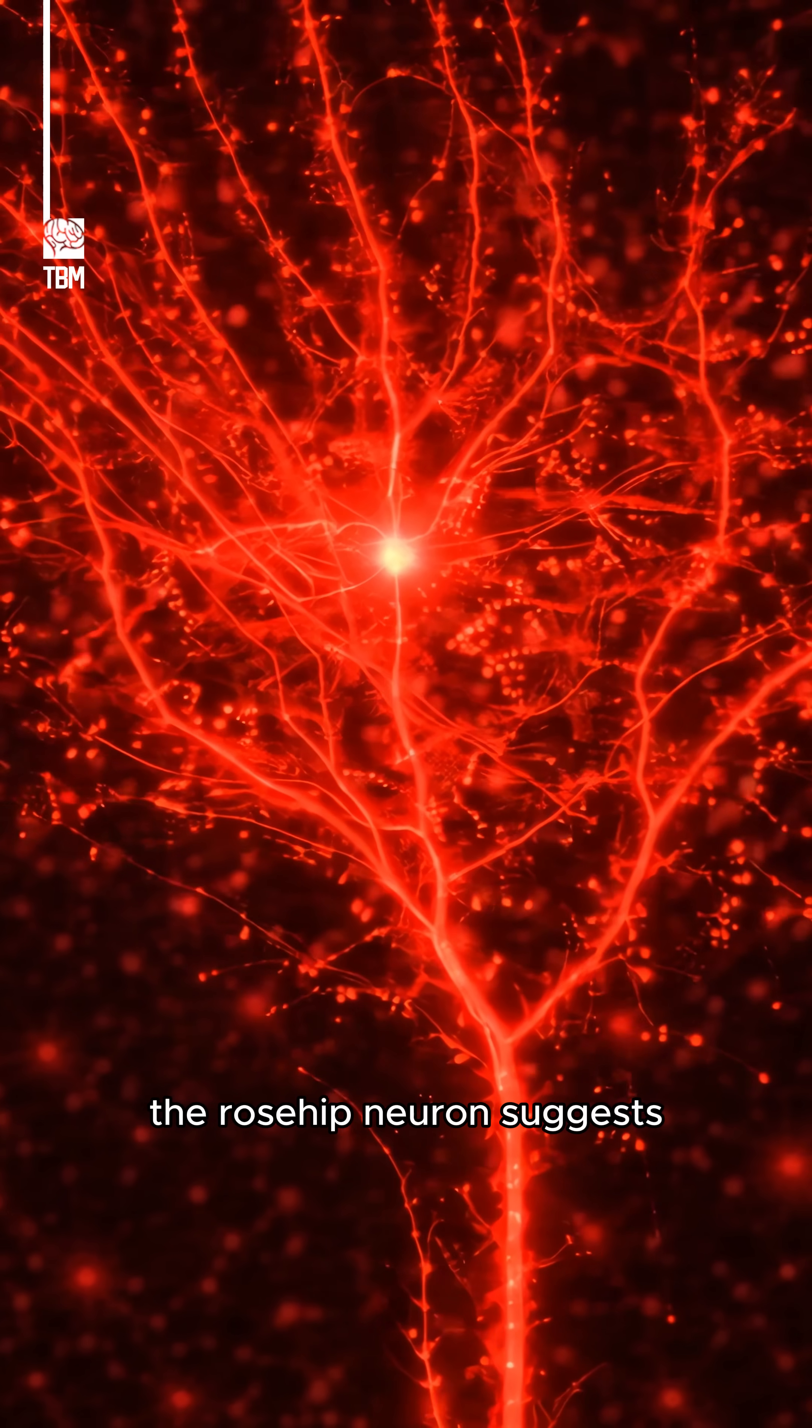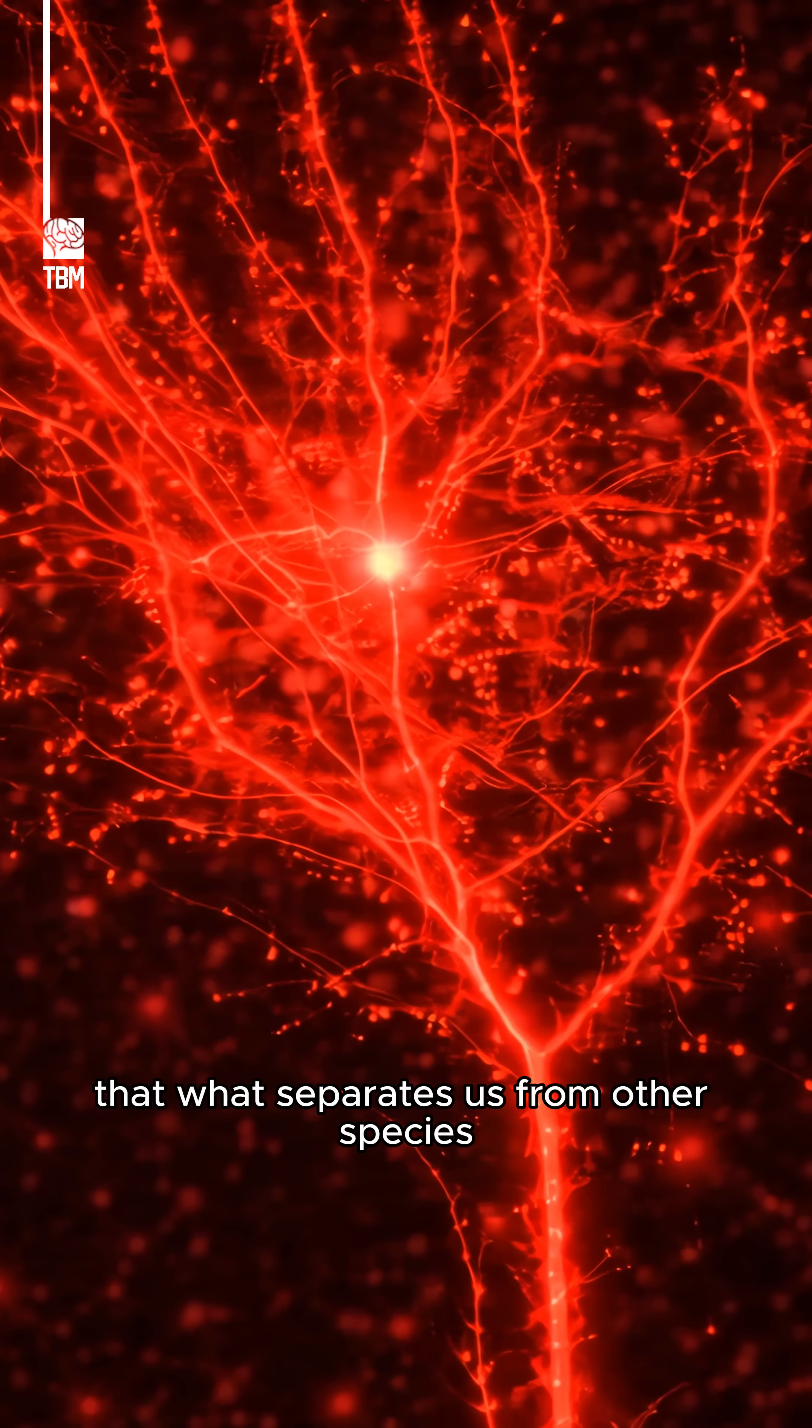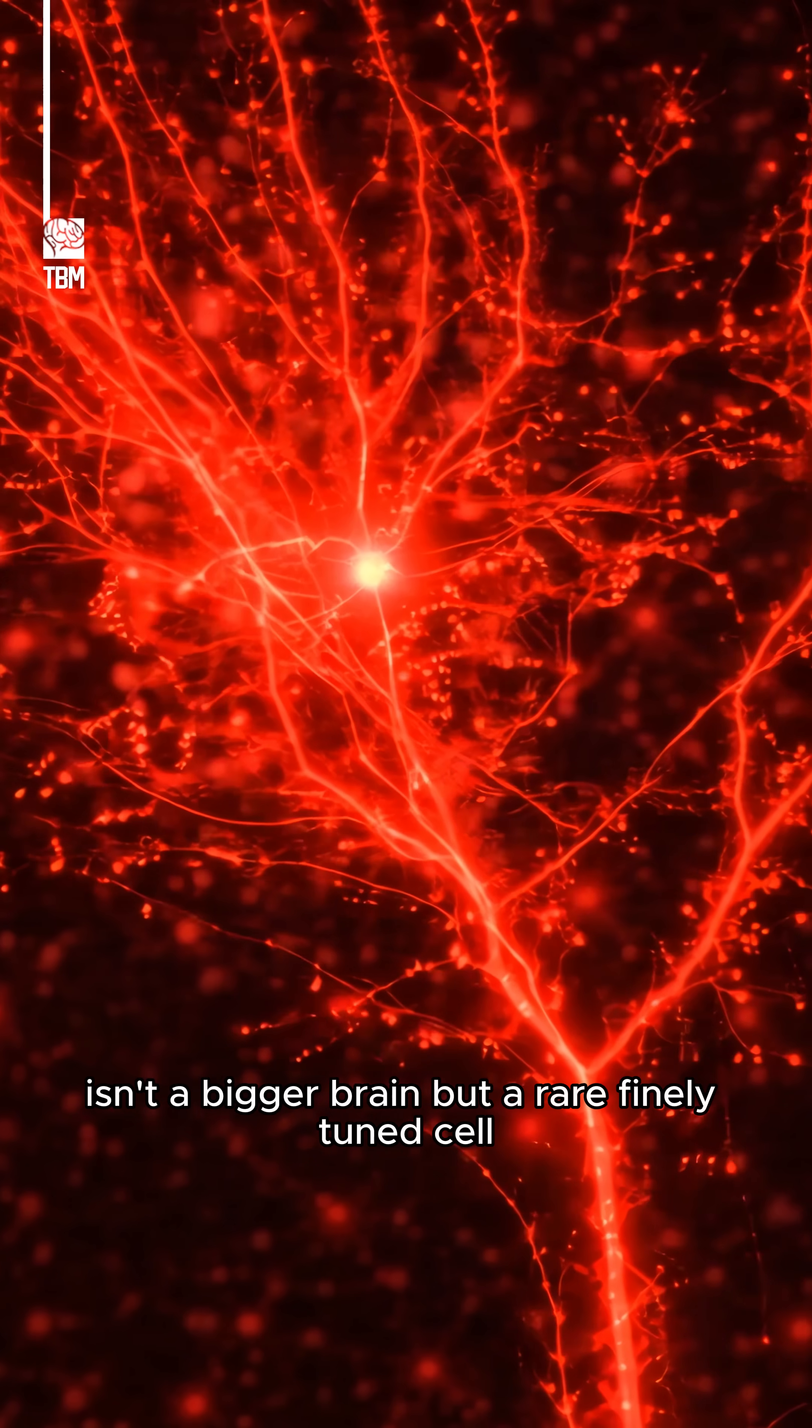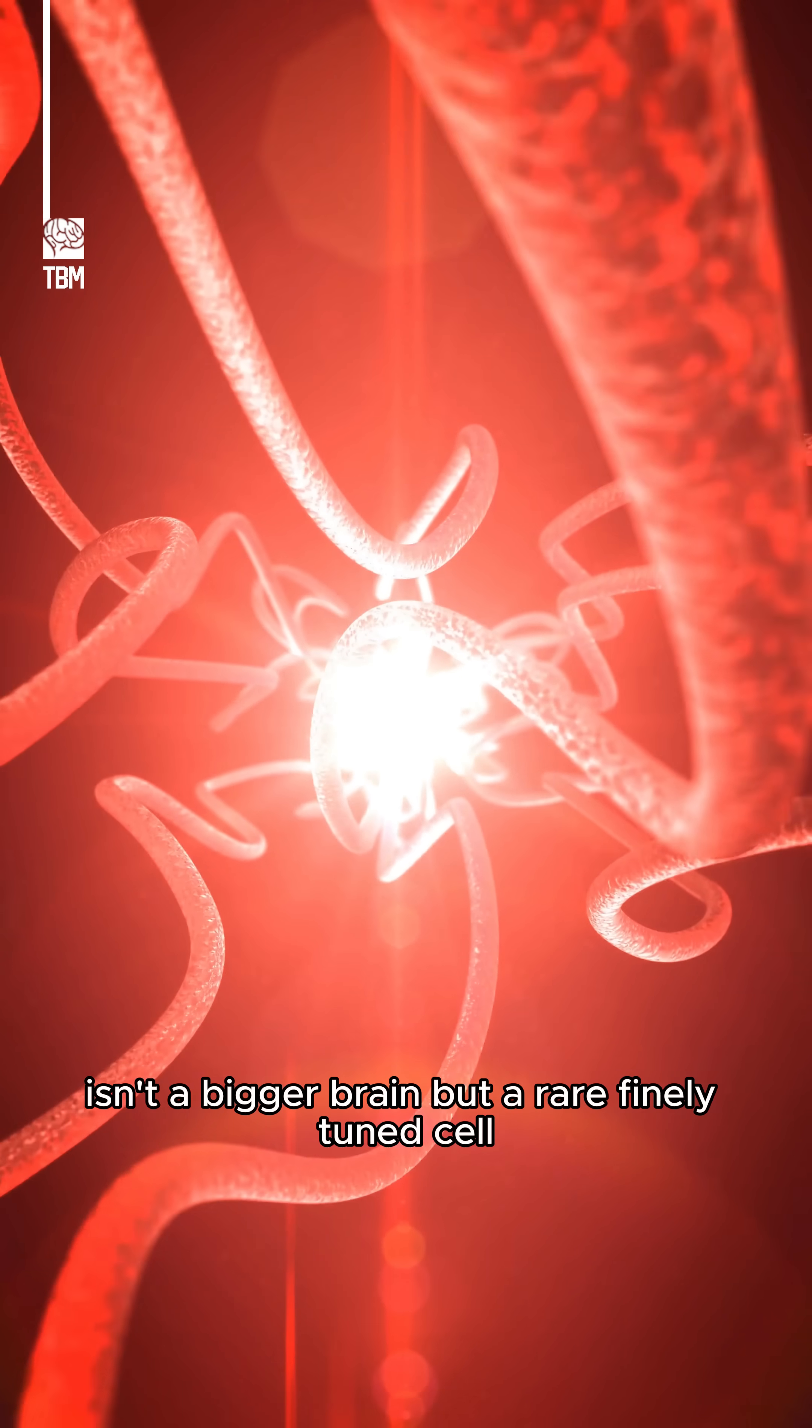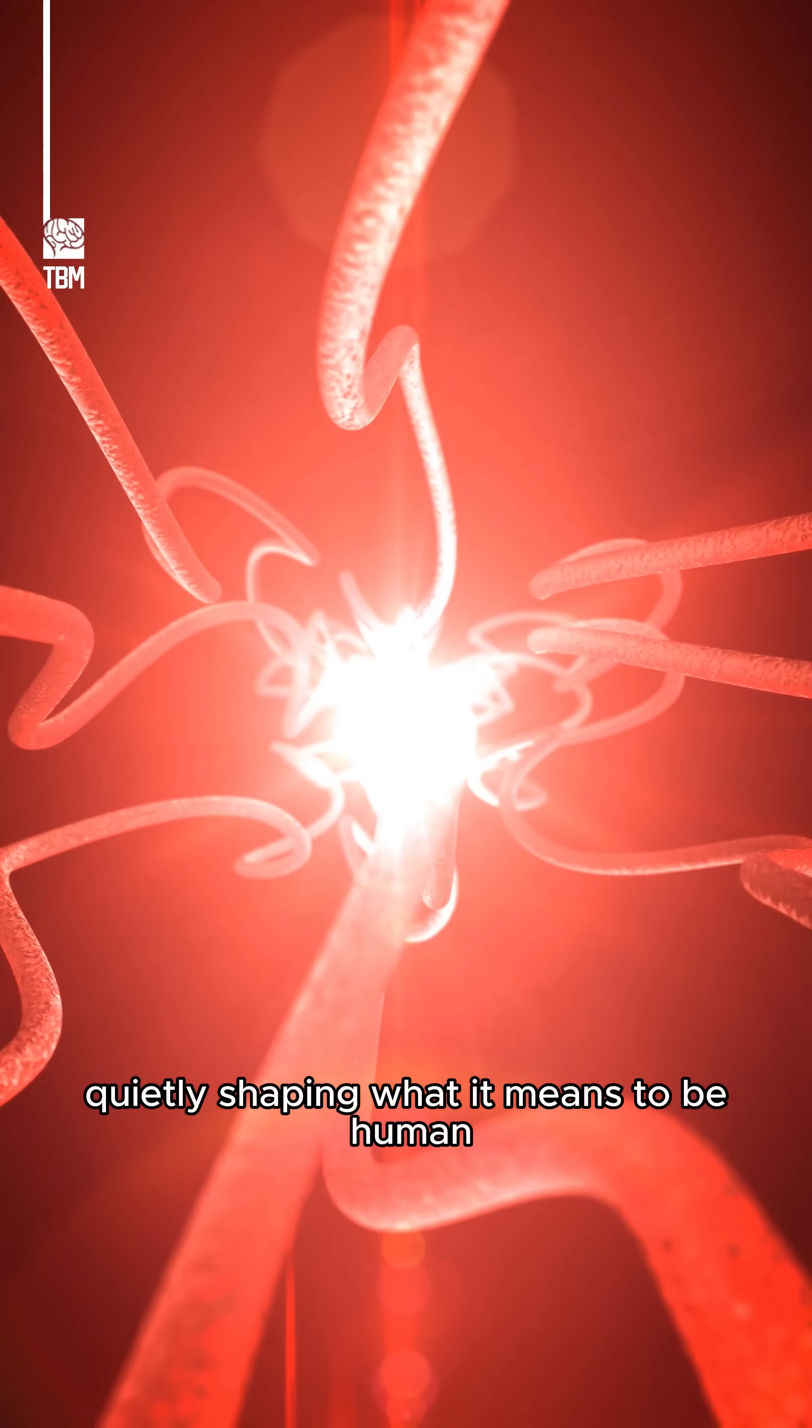The rose-hip neuron suggests that what separates us from other species isn't a bigger brain, but a rare, finely-tuned cell quietly shaping what it means to be human.